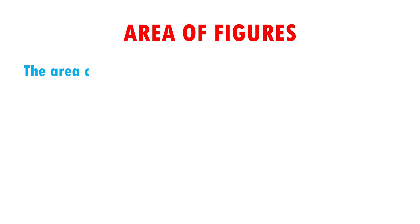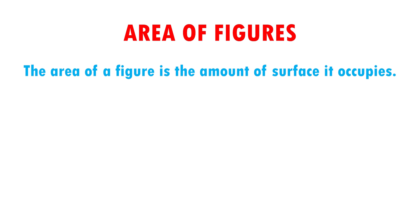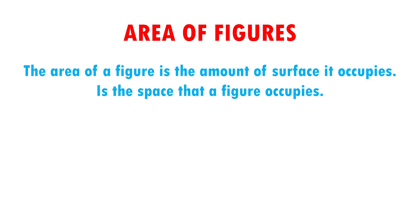The area of a figure is the amount of surface it occupies. In other words, the area is the space that a figure occupies. To measure the area of a figure, choose a unit square and count how many squares the figure occupies.